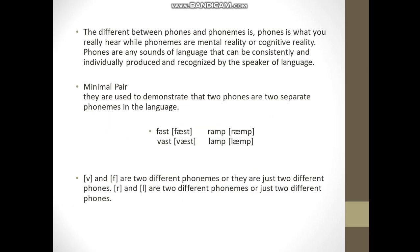The difference between phones and phonemes is that a phone is what you actually hear, while a phoneme is a mental or cognitive reality. Phones are any sounds of a language that can be consistently and individually produced and recognized by speakers. Next: minimal pairs. Minimal pairs are very important because they are used to demonstrate that two phones are two separate phonemes in a language.